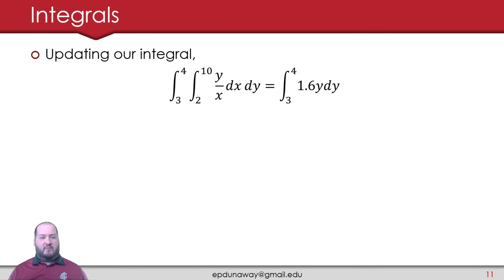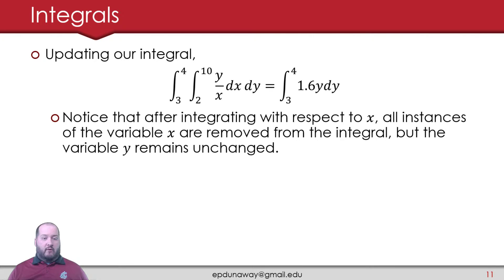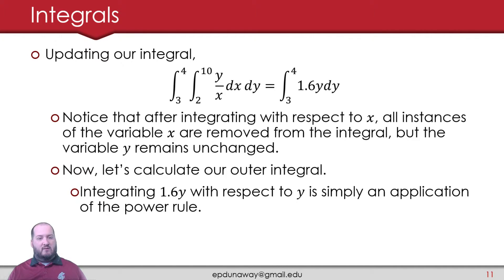Let's update our integral. We went from a case where we had two integrals. Now we just have one integral. We have the integral from 3 to 4 of 1.6y dy. If you'll notice, after we integrate it with respect to x, all instances of that variable x are removed from the integral. But the variable y really remains unchanged, and that's because we treat it like a constant. So now let's calculate our outer integral.